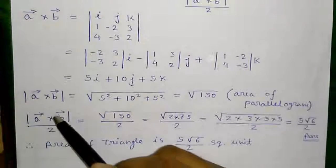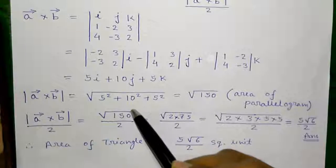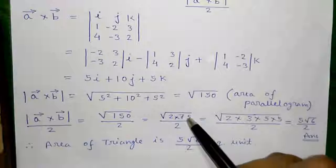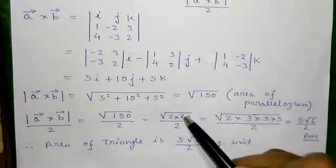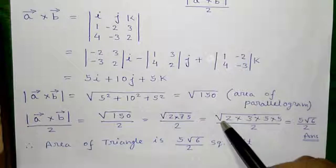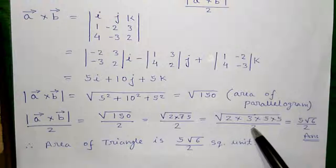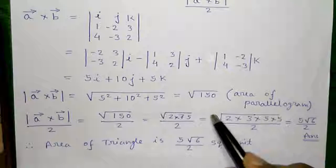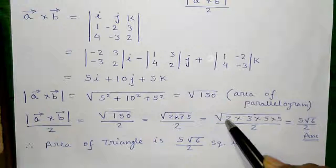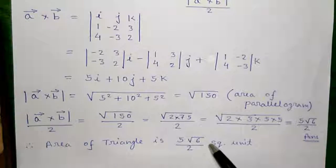Now area of the triangle will be modulus of A cross B divided by 2 equals to root over 150 by 2 or we can write root over 2 into 75 by 2, again 75 is 3 into 25 and again 25 is 5 into 5 so we can write root over 2 into 3 into 5 into 5 divided by 2. So 5 into 5 is 5 square so 5 will go out so we are left with 5 into root 6 by 2 and that is our required area of the triangle.